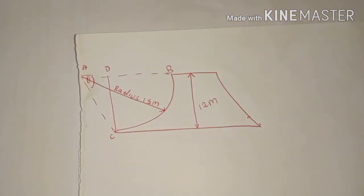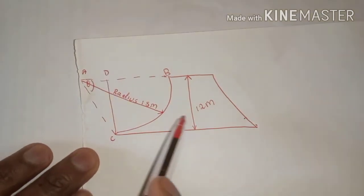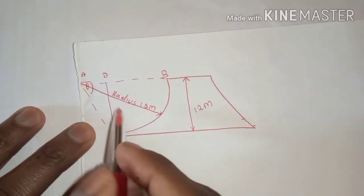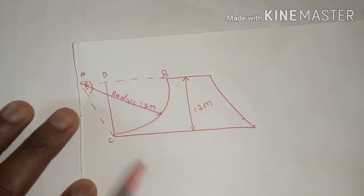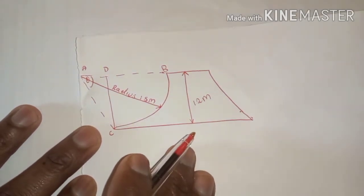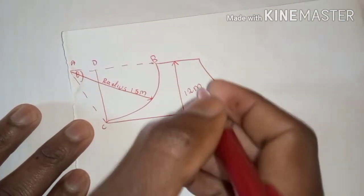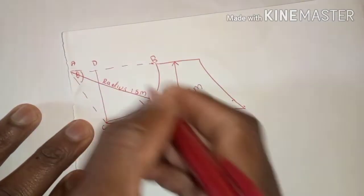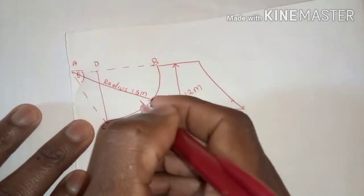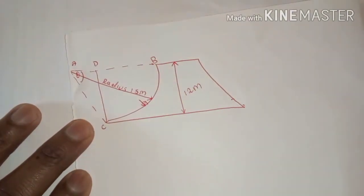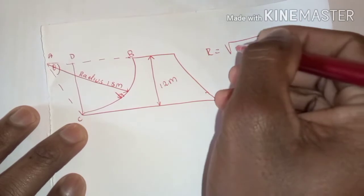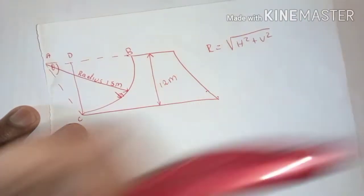This is the diagram we are given. The distance from here to here is 12, and the radius from this point to this point is 15. We are asked to calculate the resultant force, which is the force of the water within section DBC acting at a right angle. We know R is given by √(H² + V²).